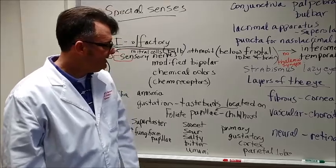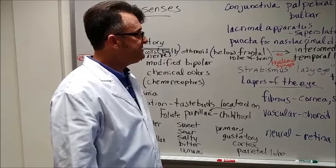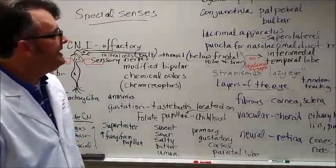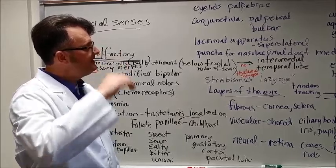Remember that the primary gustatory cortex is in the parietal lobe. When I looked at this on a brain, I actually thought it was temporal because it's just exactly above the temporal lobe and the parietal lobe.